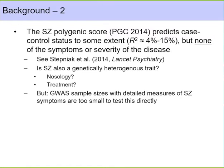One approach would be to run GWAS analyses on specific symptom traits or severity directly. Unfortunately, there are very few datasets in the world that have collected high-accuracy symptoms and severity phenotypes for schizophrenia patients, and the available sample sizes are orders of magnitude too small for direct GWAS. What we can do instead is make progress by borrowing information from genetically dependent traits.